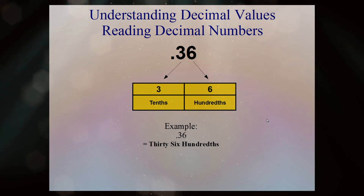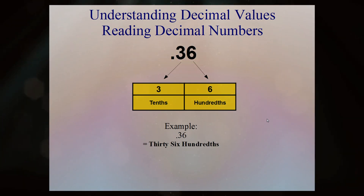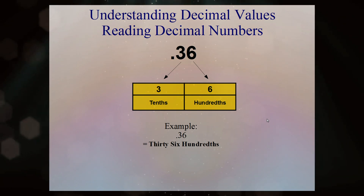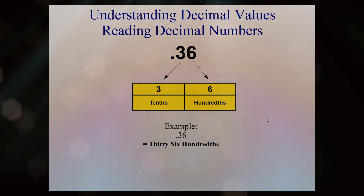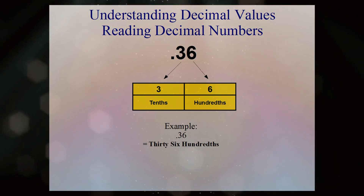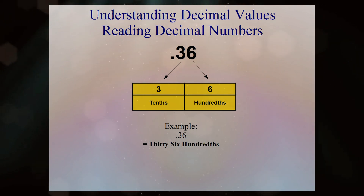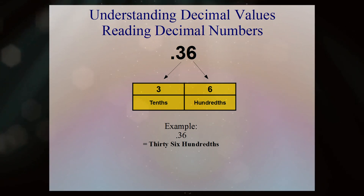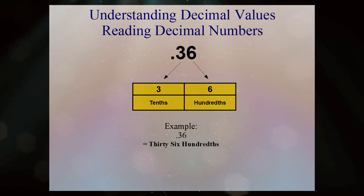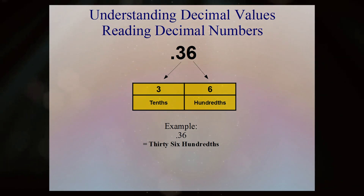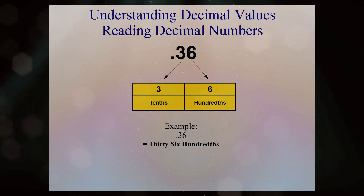We've reduced it now to two digits to the right of the decimal point. We can see that we have our tens and our hundreds spot, so this will be a hundredths number. The number is thirty-six hundredths.